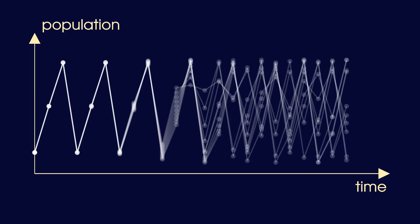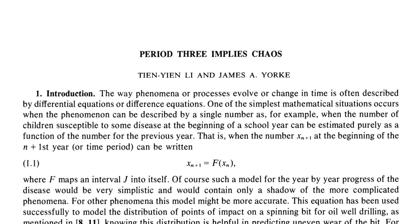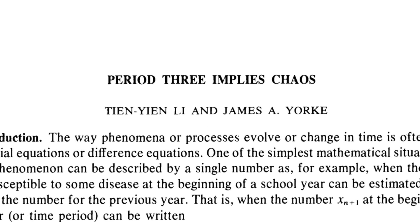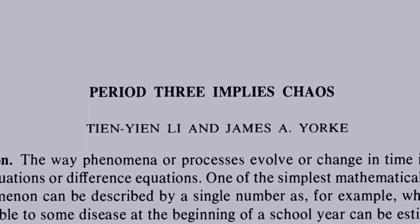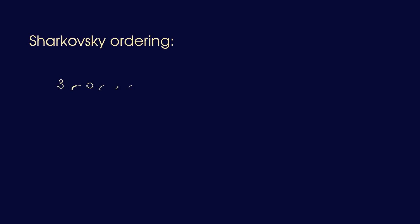When Lee and York published their paper in 1975, the claim that a three-periodic solution implies solutions of any other period was new to mathematicians in the West. However, it turned out to be a special case of a 1964 theorem by Ukrainian mathematician Aleksandr Tsiakovsky, which orders all positive integers in such a way that if an x-periodic solution exists, then for all numbers y following x in this ordering, y-periodic solutions exist as well. The claim we've discussed in this video is that the number 3 is at the top of the sequence, and a 3-periodic solution implies solutions of any other period.